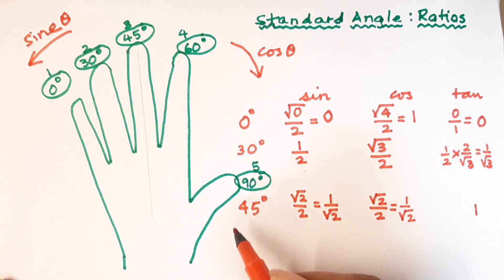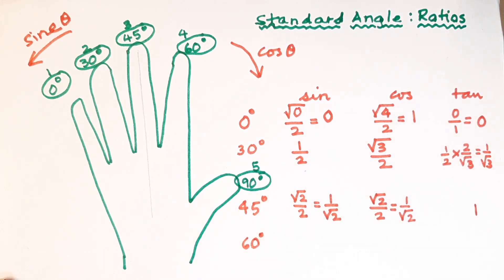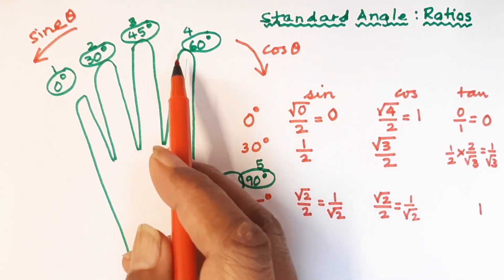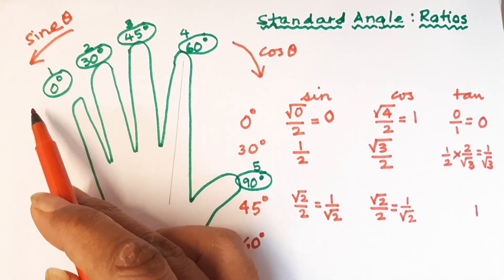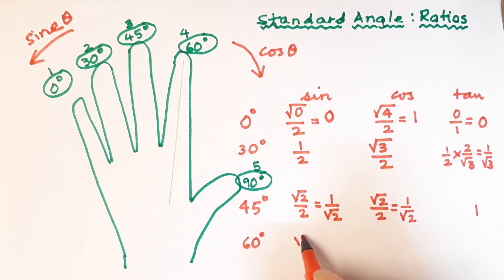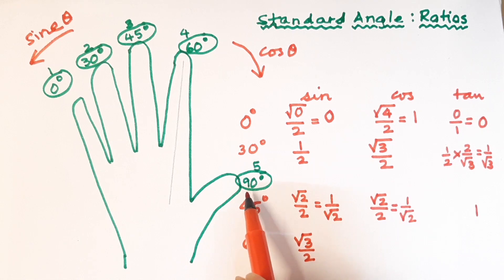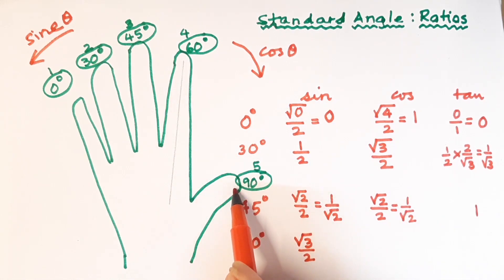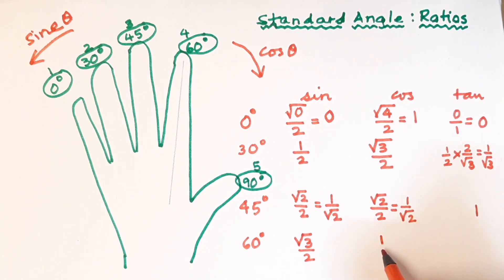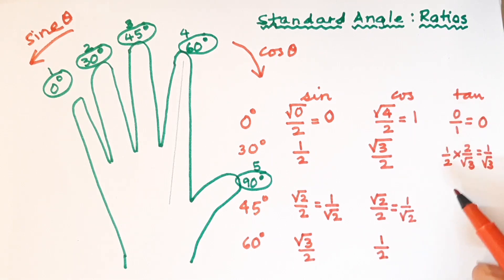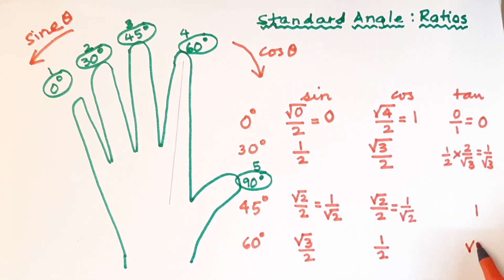Now for 60 degrees. For sine of 60°, we look at the fingers on the left — there are three fingers, so root of three divided by two gives us sine of 60°. For cos of 60°, on the right there is one finger — the thumb — so root of one is one, divided by two gives one-half. Tan of 60° is sine upon cos, which gives root three divided by one-half, equal to root three.